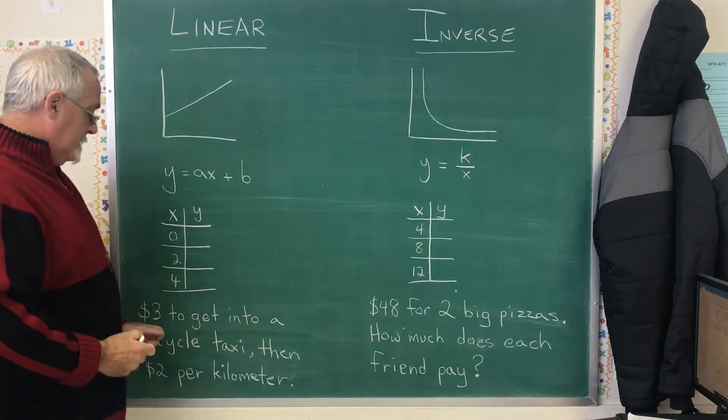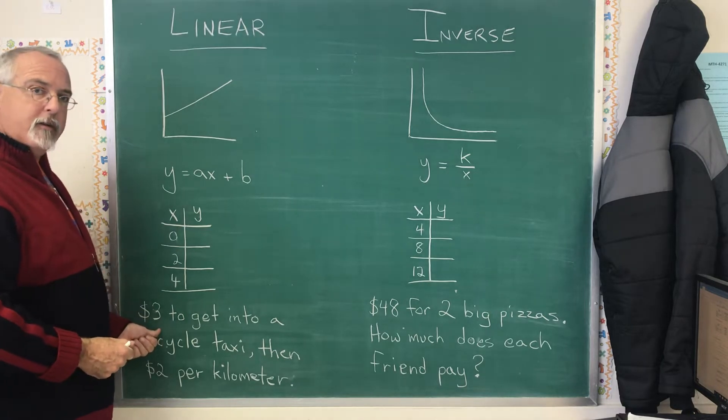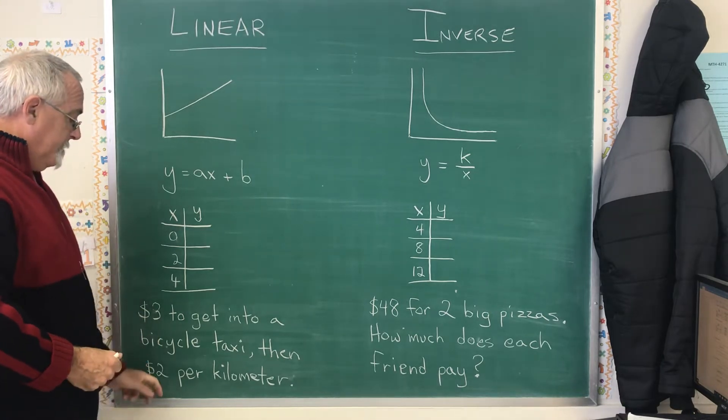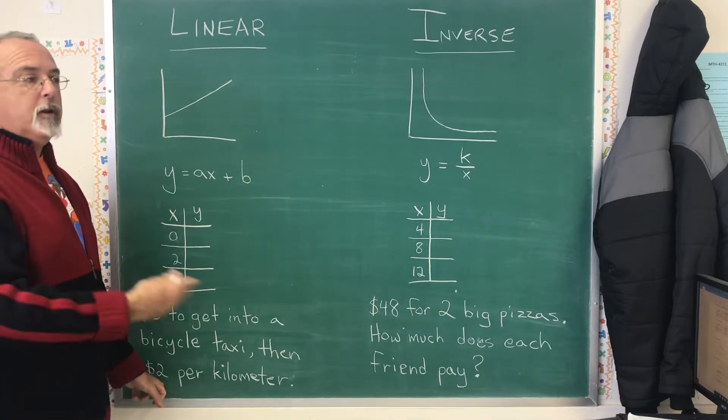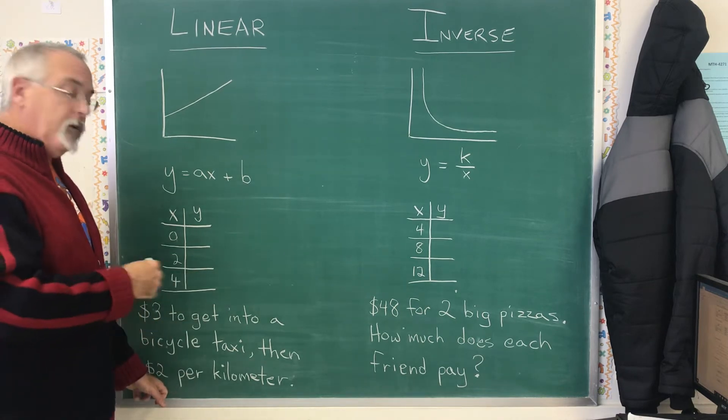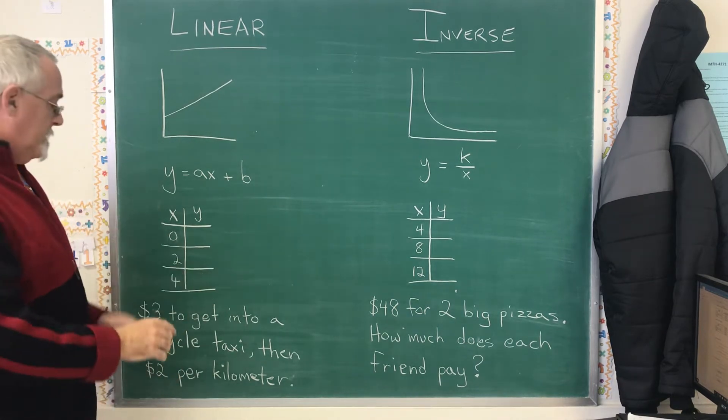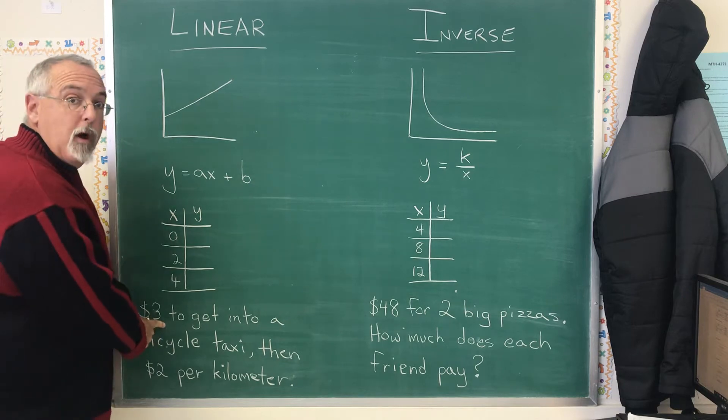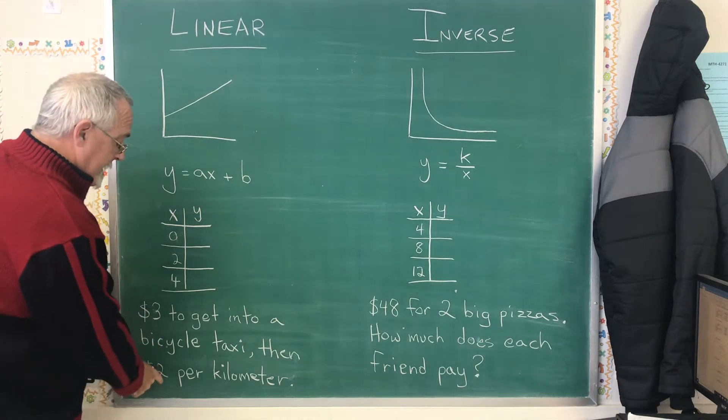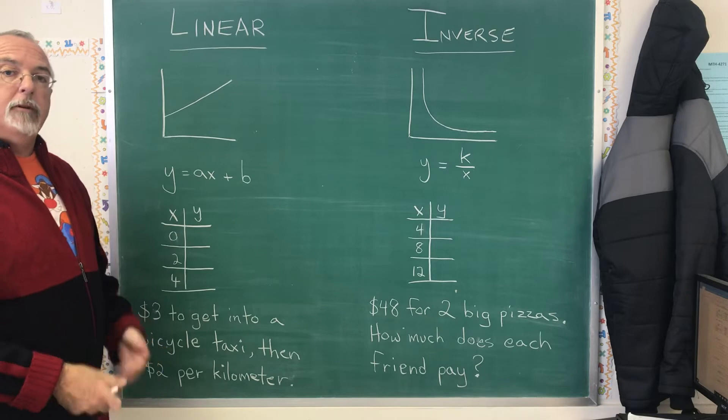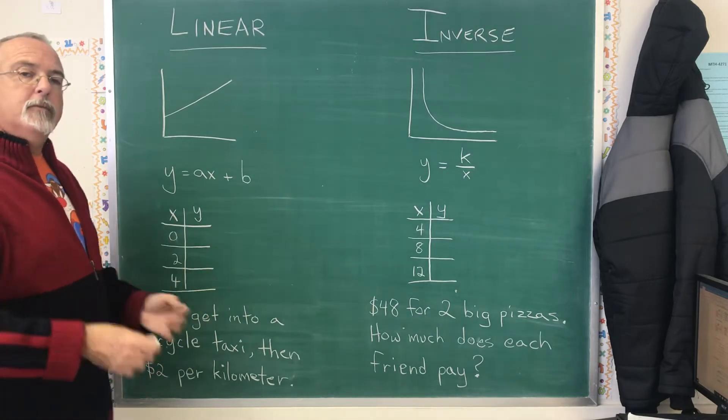When I see that there's an amount you pay just to start and then you're being charged an amount per kilometer or perhaps an amount per hour or an amount per minute, that is an indicator to me that the amount to start is a y-intercept and then the amount per minute or the amount per kilometer is a slope. Again, this comes with practice.